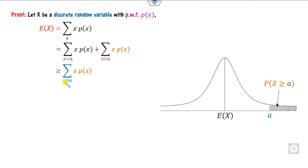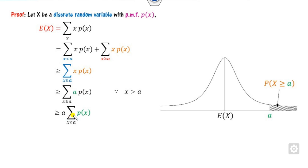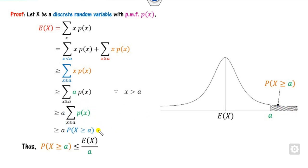In this case, we focus on X greater than or equal to A. You can substitute X ≥ A here. Since A is a constant, it can be taken outside the summation. This summation is nothing but the shaded portion, which gives us the probability. So from here you can find the probability for the discrete case.